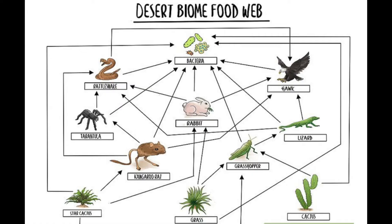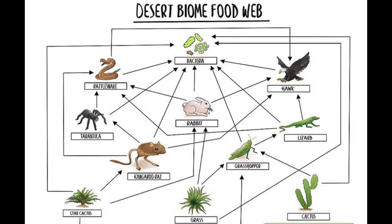The first food web that we're going to look at is one of a desert biome. In this specific food web we have three types of primary producers: our star cactus, our grass, and our regular cactus. These are taking up the first trophic level because they are taking in sunlight and producing organic molecules that will then be transferred to the rest of the food web. As you can see there are a whole lot of lines on this food web to take in.